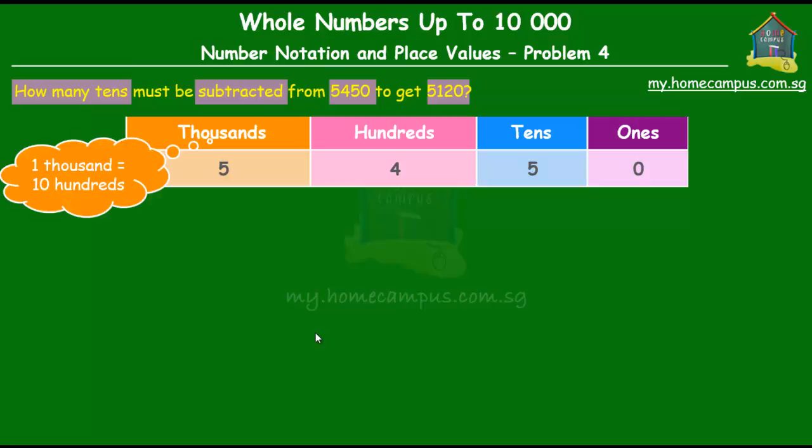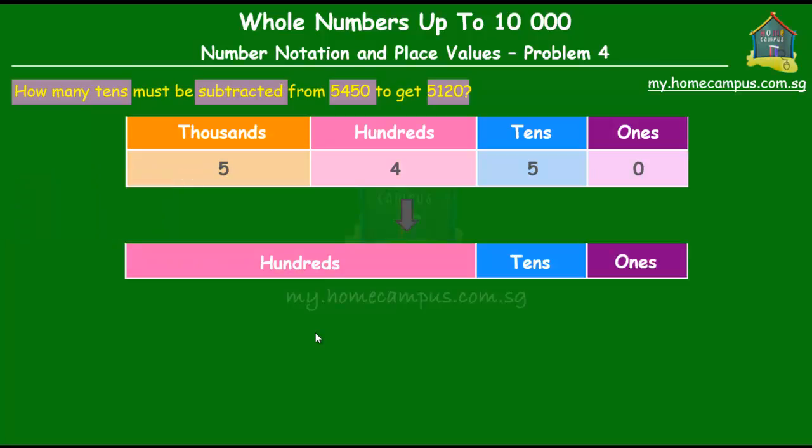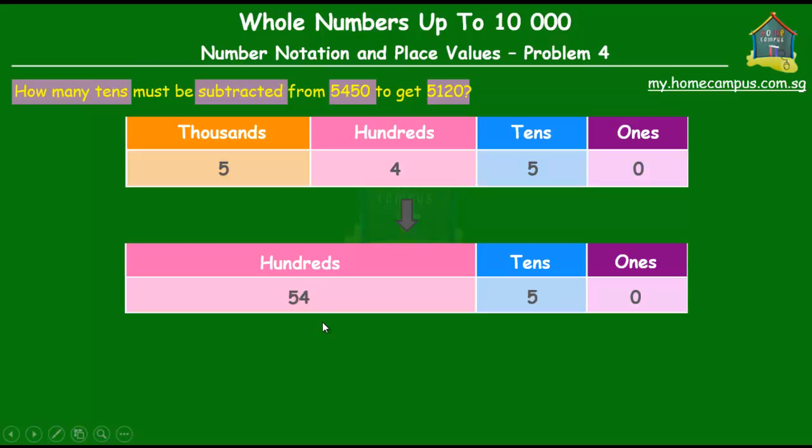now we know that 1000 is equal to 10 hundreds. So, obviously then 5000 would be equal to 50 hundreds. So, if we were to change this place value chart, so it looks something like this, with no thousands but the thousands and hundreds combine into one column, then we have 50 hundreds from the 5000, 400s from here. So, all together there would be 54 hundreds, 5 tens and 0 ones.